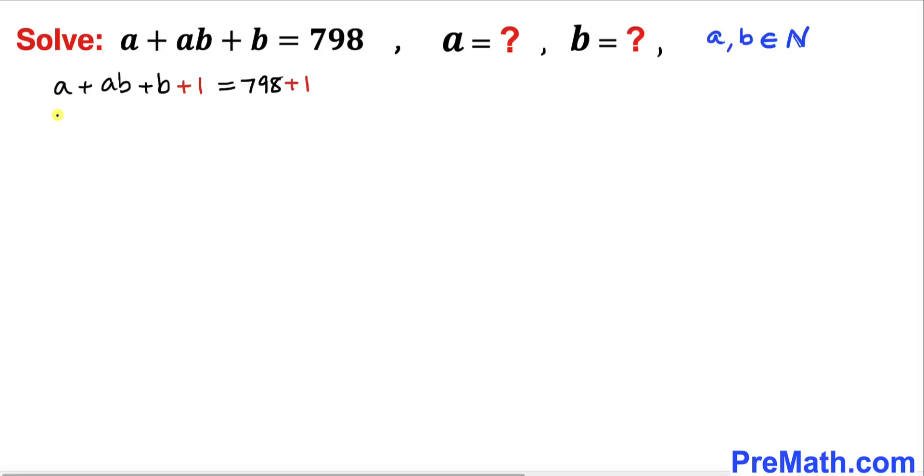Therefore I can factor out a, so we end up with a times (b plus one). Between these two terms, positive one is in common. I can write (b plus one) equals, on the right hand side, 798 plus one, which makes 799.